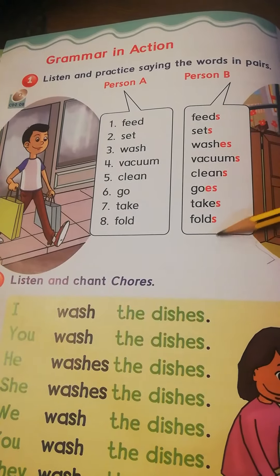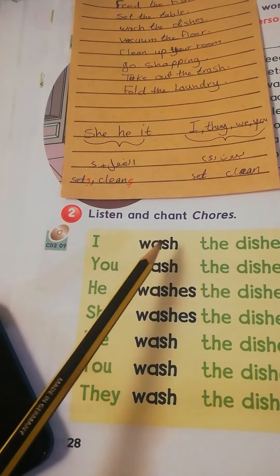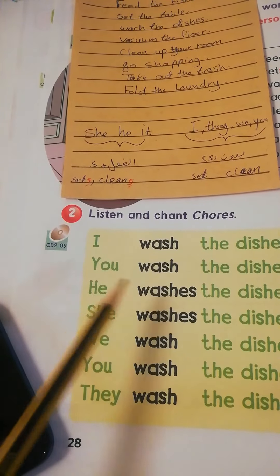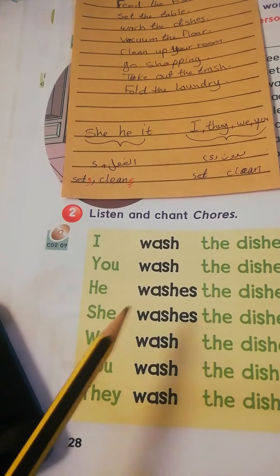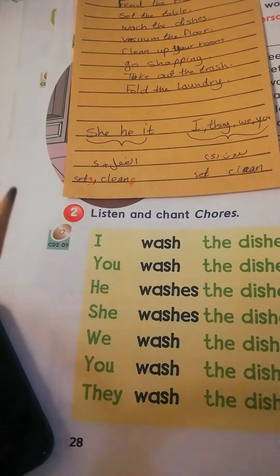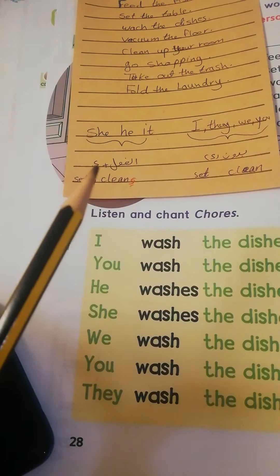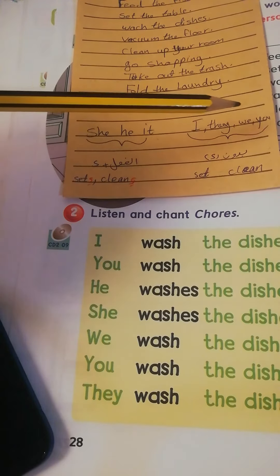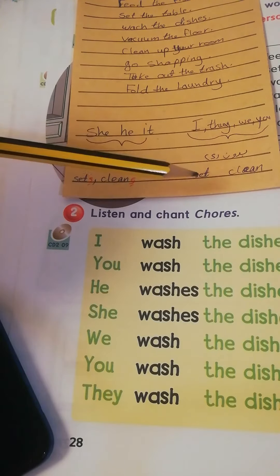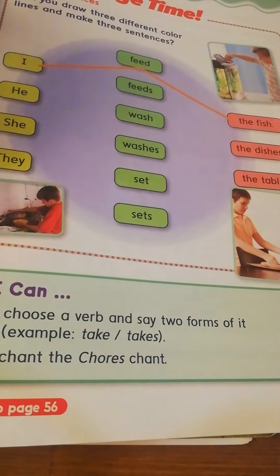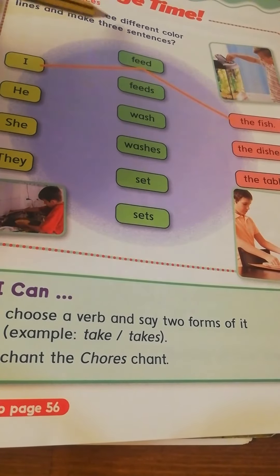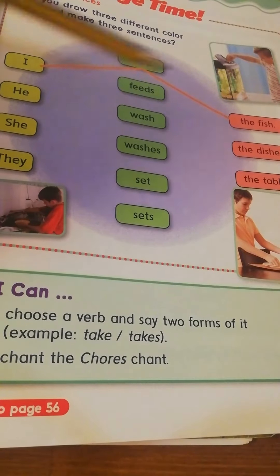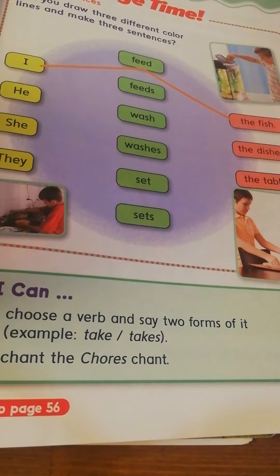نلاحظ: I الفعل زي ما هو — wash. You wash. He watches. She watches. We wash. You wash. They wash. لاحظ: he وهي وit يأخذون s بالفعل. شي للبنت، هي للولد — تحط الفعل مع s. الباقي: الفعل زي ما هو بدون إضافة s.